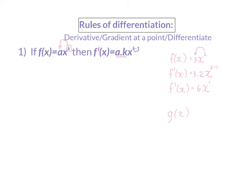Or, if we have g(x) as minus 6x cubed, to calculate the derivative, I am going to start off taking the exponent of 3 and multiplying it in front. So, that will be minus 6 multiplied by 3, and in my exponent, I subtract 1. So, the final derivative will be minus 18x squared.